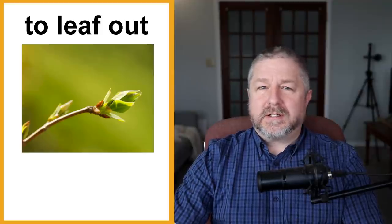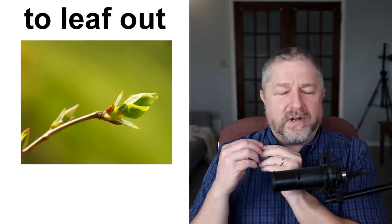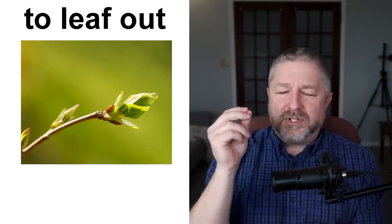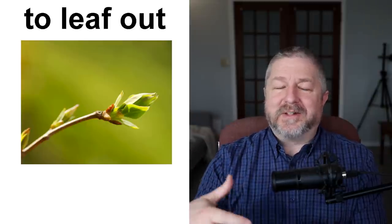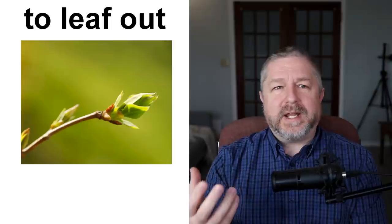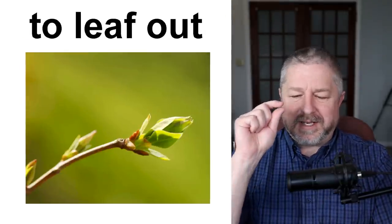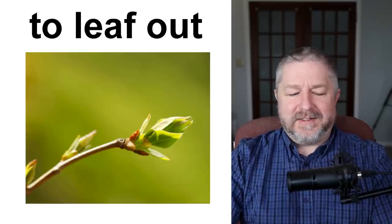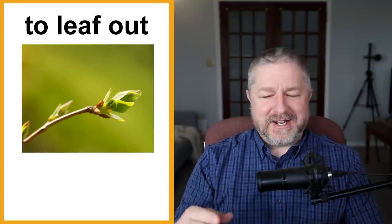The trees start to leaf out. If you see this picture here, you'll notice that small leaves are starting to come out of the branch on this tree. When I go outside in the spring, the trees are just starting to leaf out. In about a month, the trees will have leafed out, they'll have leaves, and you can sit in the shade. Right now the trees are just starting to get leaves on them — they're very, very tiny. When you make videos outside, it's nice to make them in the shade, but in the spring before the trees leaf out, it's very sunny and warm but there's no shade.